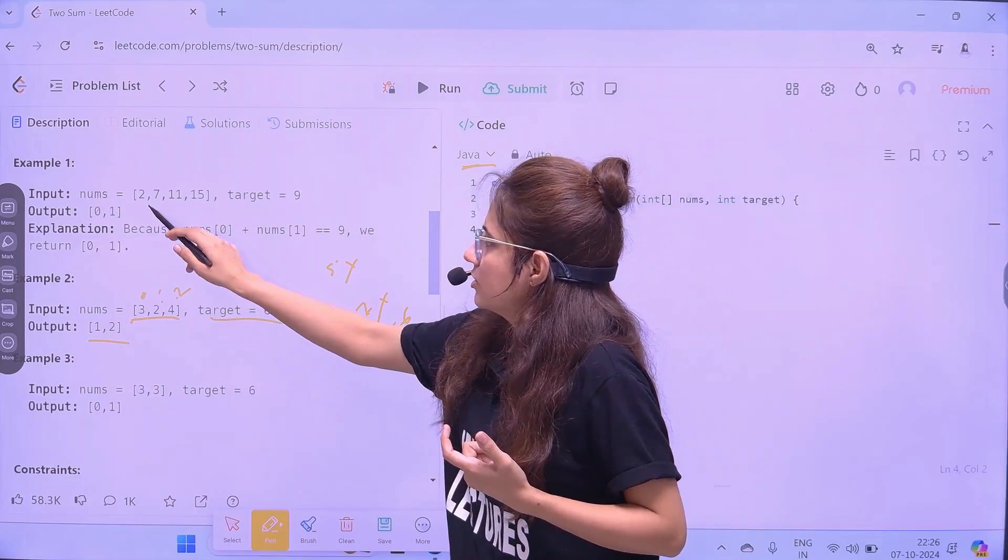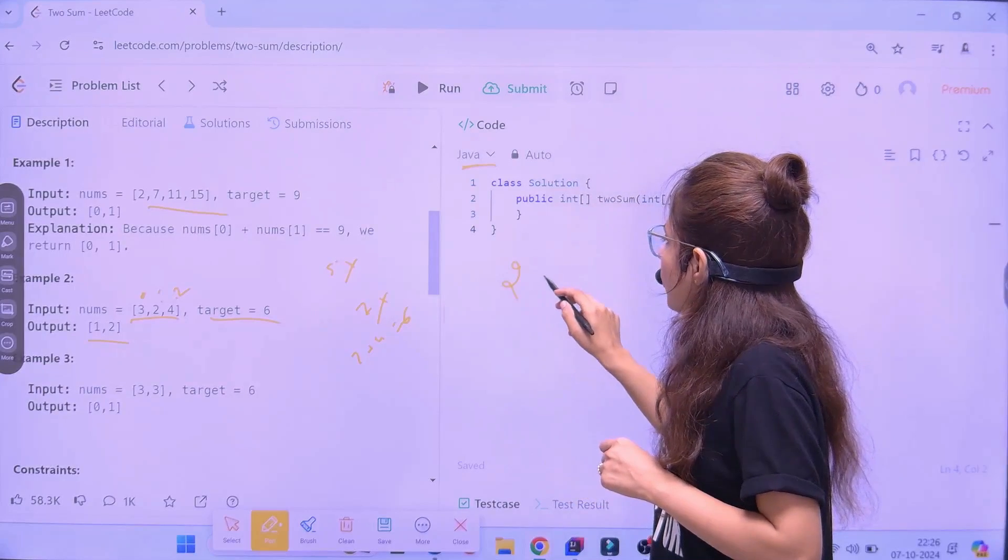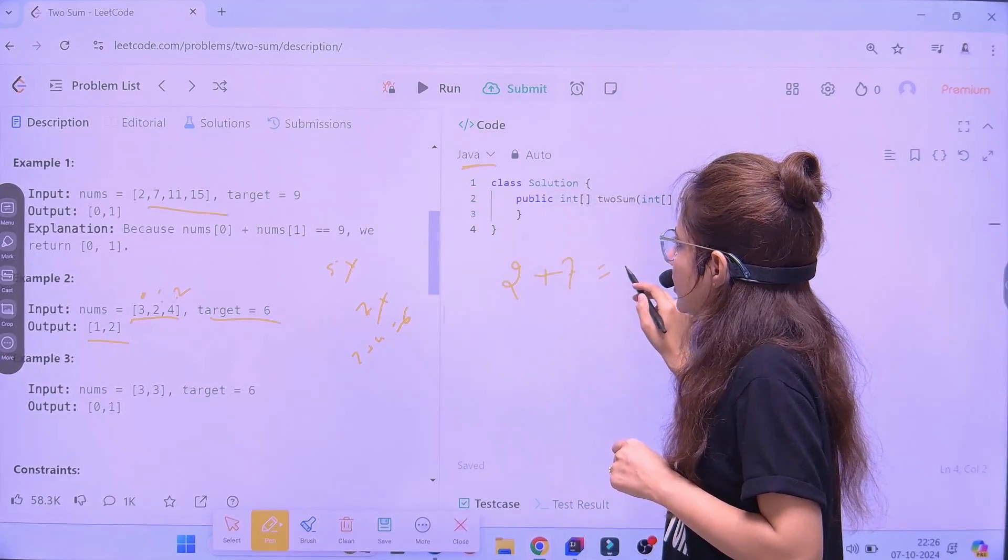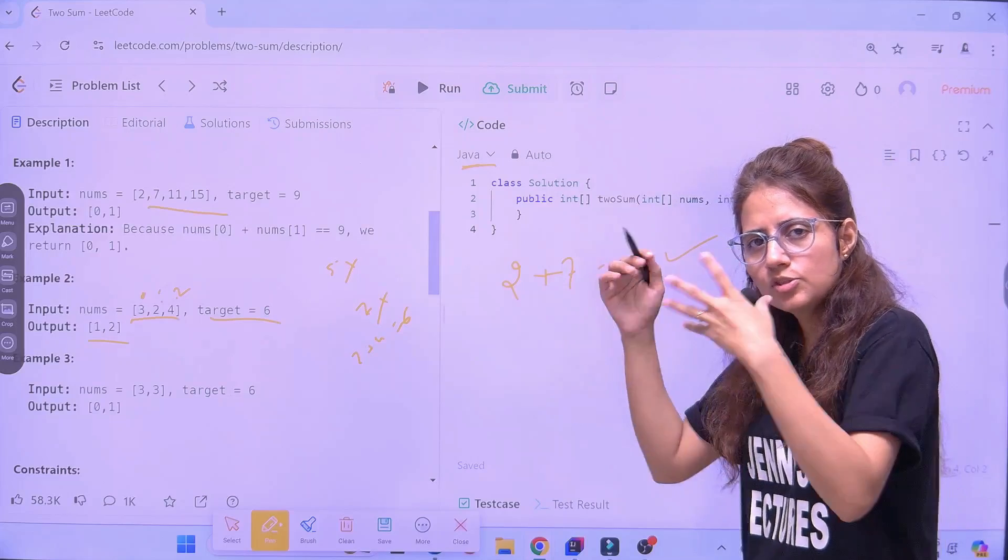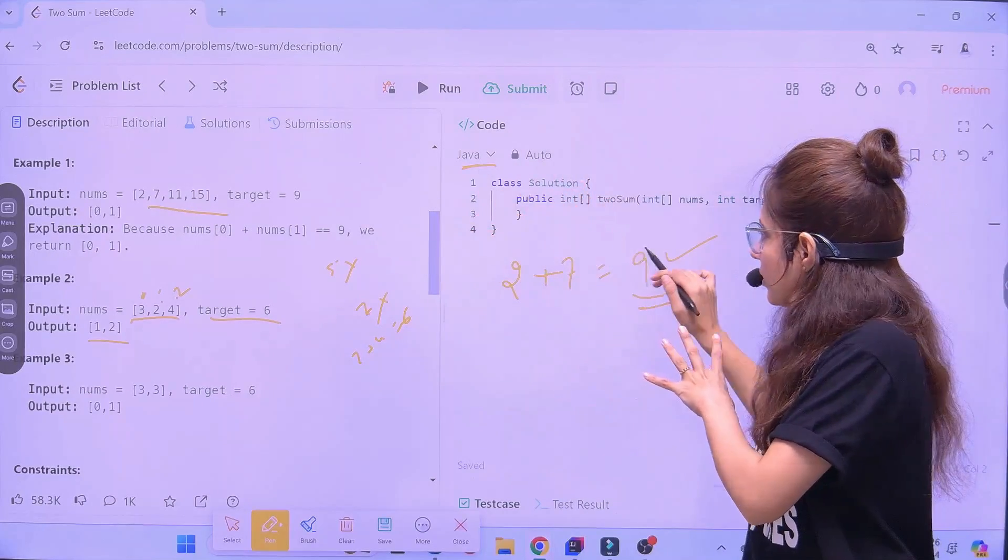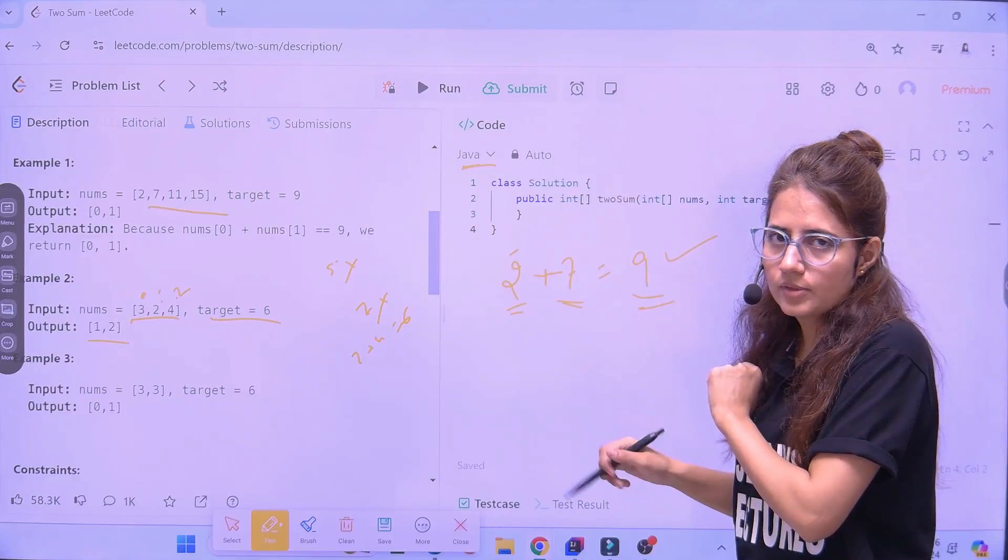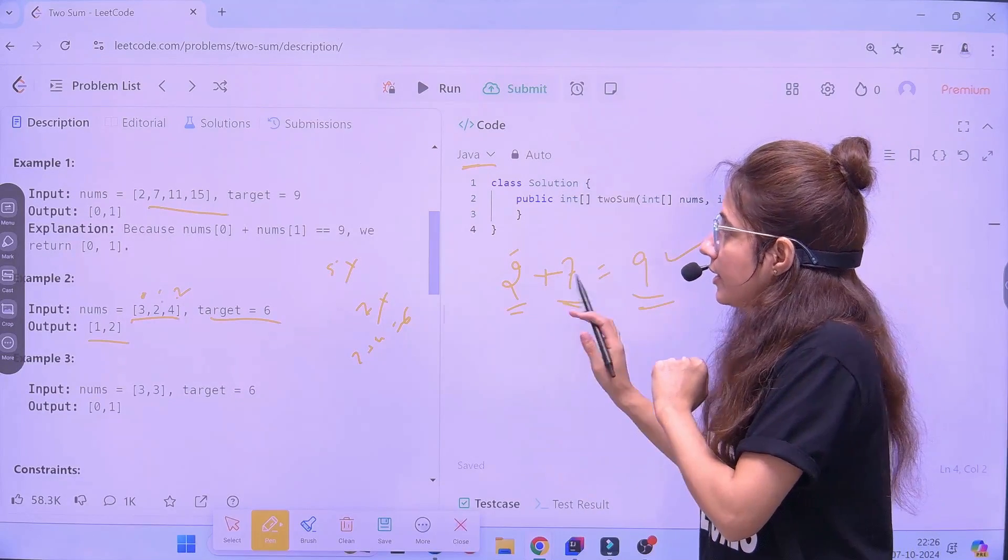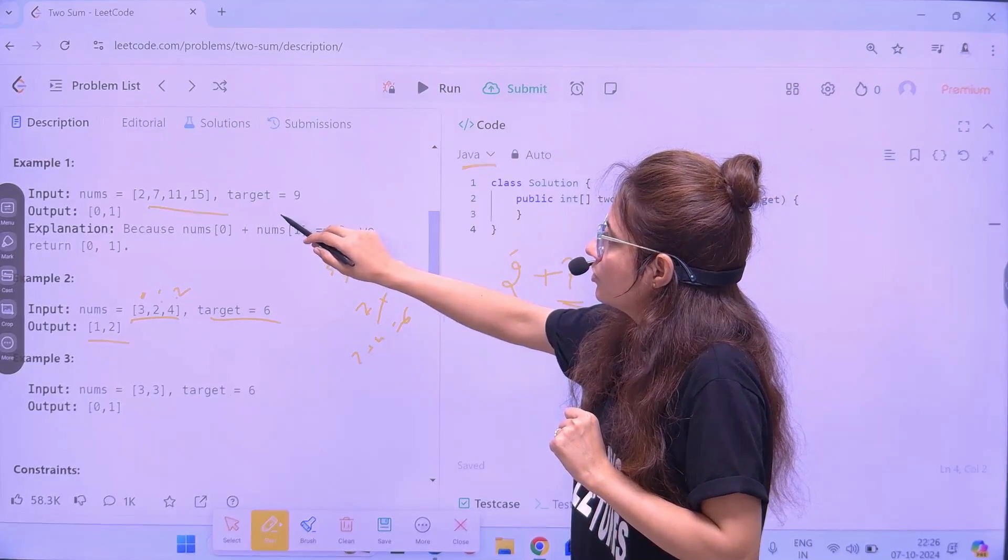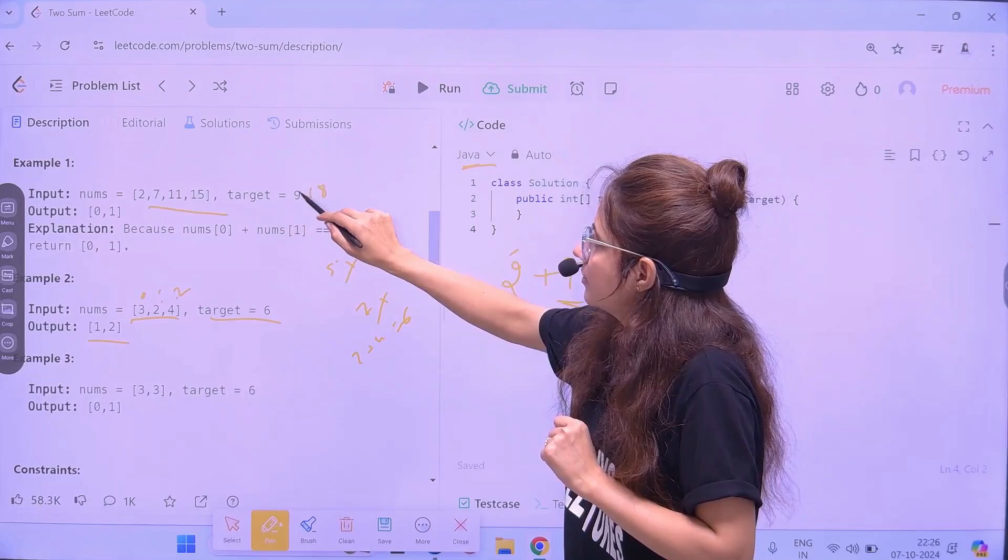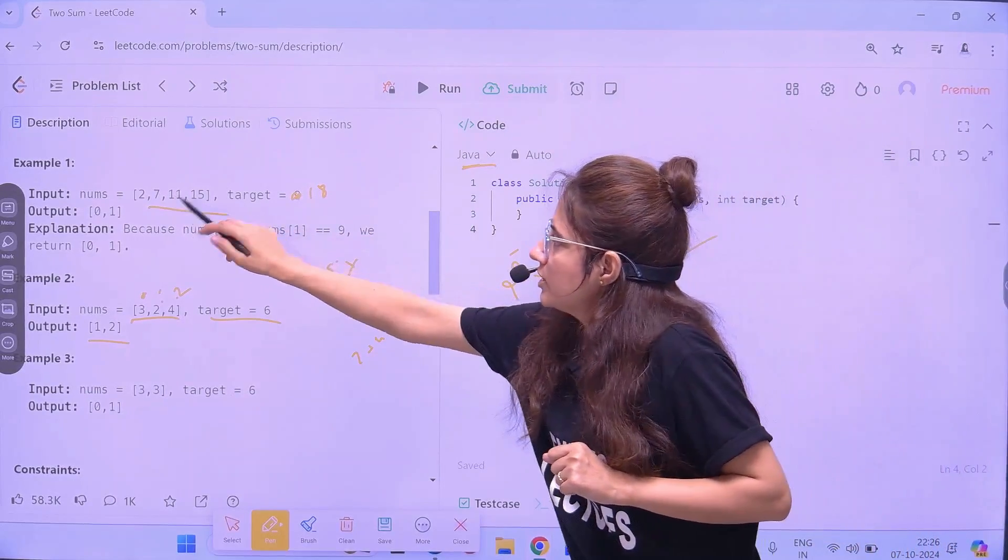So, see how you can solve, how you can think to solve this problem. First, we will see. Like, suppose this is the input we are given. So, first, we will see. Let's take 2. Now, try to add with 7 and check. Is it 9? Yes. If you got the very first time, just stop. Now, you don't need to check further. You will return only indexes of this 2 and 7. That is 0 and 1.